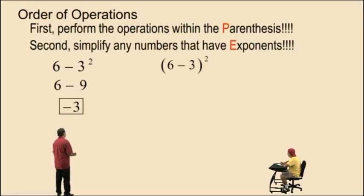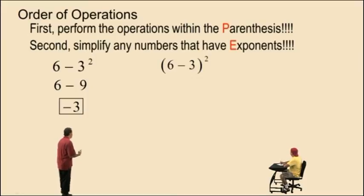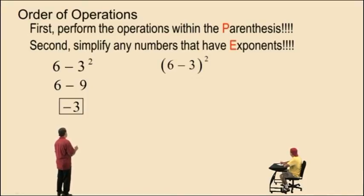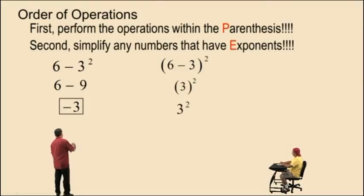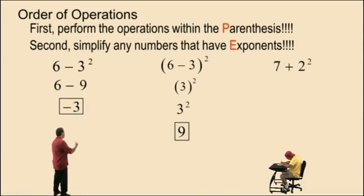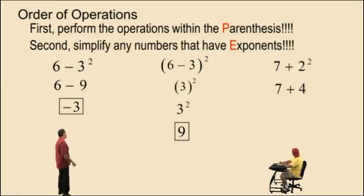Here we have 6 subtract 3 raised to the second power. We have parentheses, so before we evaluate the exponent, we have to simplify the expression within the parentheses. 6 subtract 3 is 3. Notice we have a positive 3 squared. When we have a positive number raised to an exponent, it's not required we have the parentheses. We write 3 squared, and 3 squared is 3 times 3, which is 9. Here we have 7 plus 2 squared. 2 squared is 4. Bring down your work. 7 plus 4 is 11.